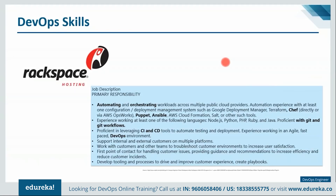Here is what Rackspace wants from a DevOps engineer. They want someone who can automate and orchestrate workloads across multiple cloud providers, with automation experience in at least one configuration or deployment management system such as Google Deployment Manager, Terraform, Chef, Puppet, or Ansible. The candidate should have experience with at least one language like Node.js, Python, PHP, Ruby, or Java, good hands-on knowledge with Git and Git workflows, and proficiency in CI/CD tools like Jenkins to automate testing and deployment. They are also expected to troubleshoot customer environments, develop tooling, improve customer experience, and create playbooks.